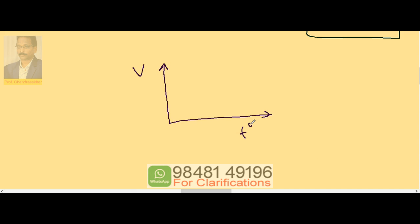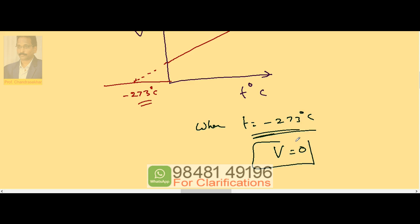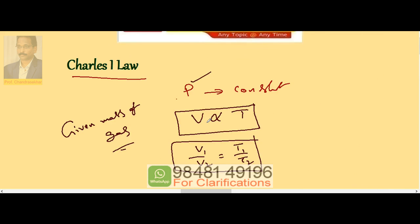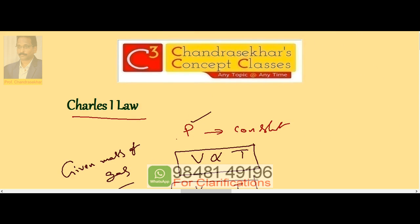Now if the same V-T graph is plotted not with the Kelvin scale but with degrees centigrade, the line passes through minus 273 degrees centigrade. When T equals minus 273 degrees centigrade, the volume occupied by the gas is zero. So Charles' Law states that at constant pressure, volume is directly proportional to temperature.